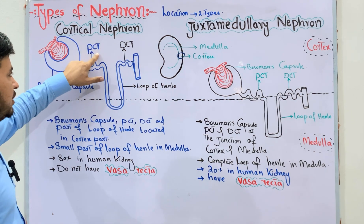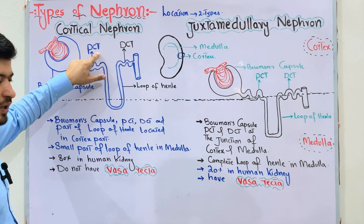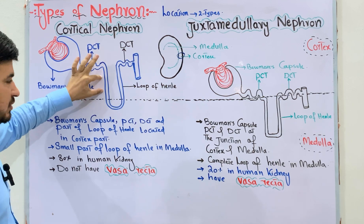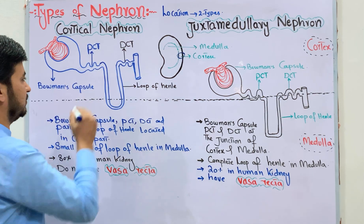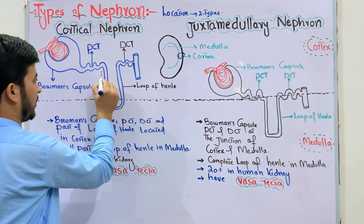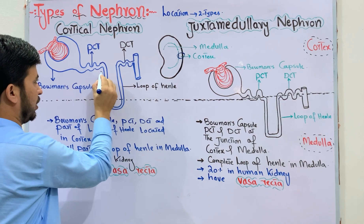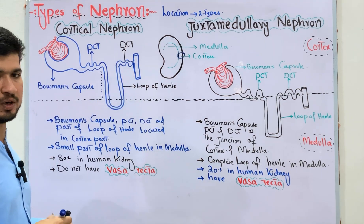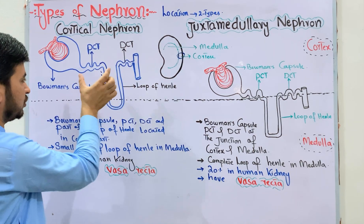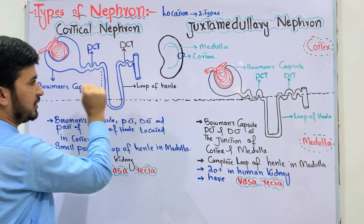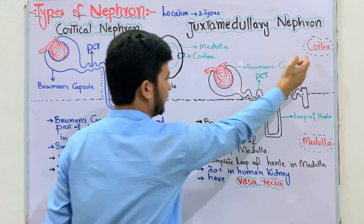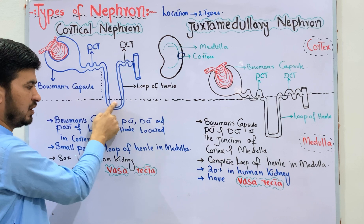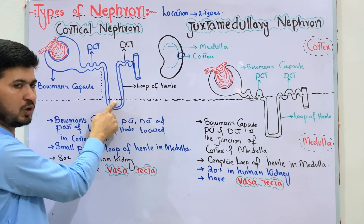In this nephron structure diagram, the proximal convoluted tubule part and the major portion of the loop of Henle are visible. The distal convoluted tubule part is also shown. The total structure is located in the cortex region, with only a small part of the loop of Henle located in the medulla region.